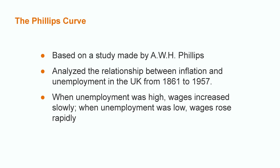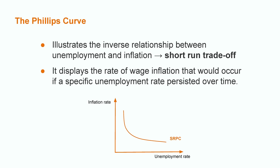The Phillips Curve is named after William Phillips. He analyzed the relationship between inflation and unemployment in the UK from 1861 to 1957. With his research, he arrived at the conclusion that when unemployment was high, wages increased slowly, and when unemployment was low, wages rose rapidly. According to Phillips' hypothesis, when the unemployment rate declines, the labor market becomes more competitive and employers are forced to boost pay more quickly in order to recruit qualified workers. The Phillips Curve illustrates the inverse relationship between unemployment and inflation — a short-run trade-off since drops in unemployment can have immediate effects on prices.